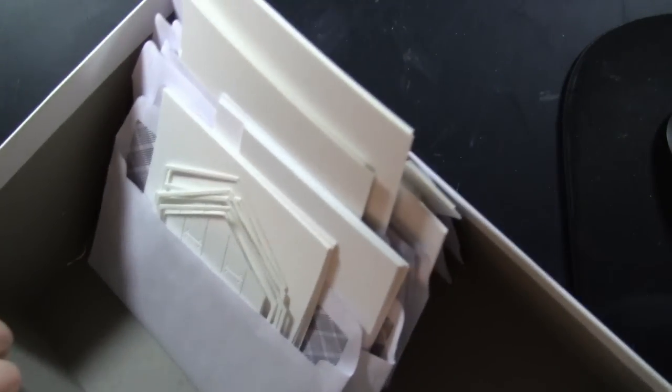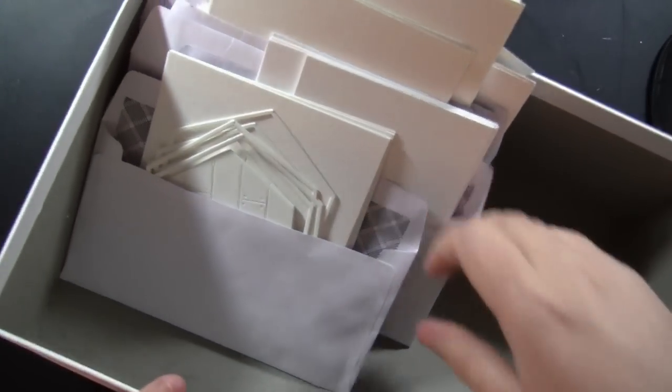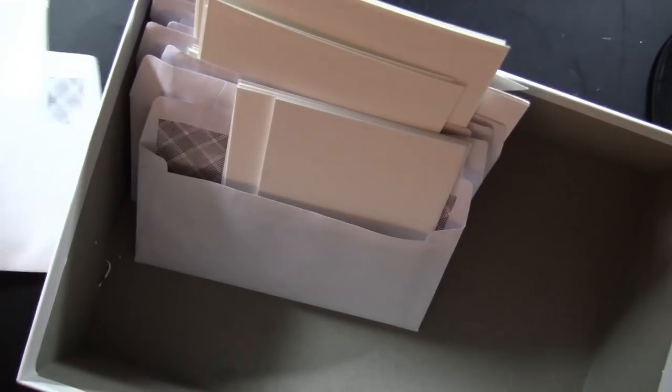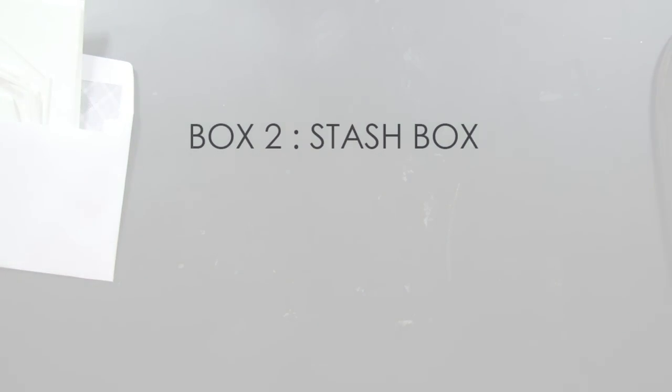So when I am doing Stash Busting, I have two photo boxes, one I call my Sketch Box, where I use the sketches that I've been giving you throughout this series, and I prep each sketch about enough to make three or four cards. I put all those prep pieces in an envelope, then I also have a Stash Box, and this is where I pull the Stash that I want to use.